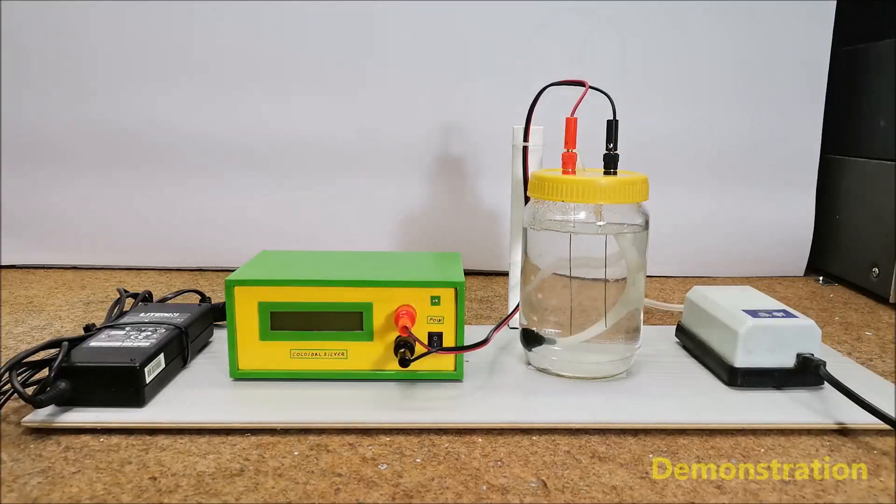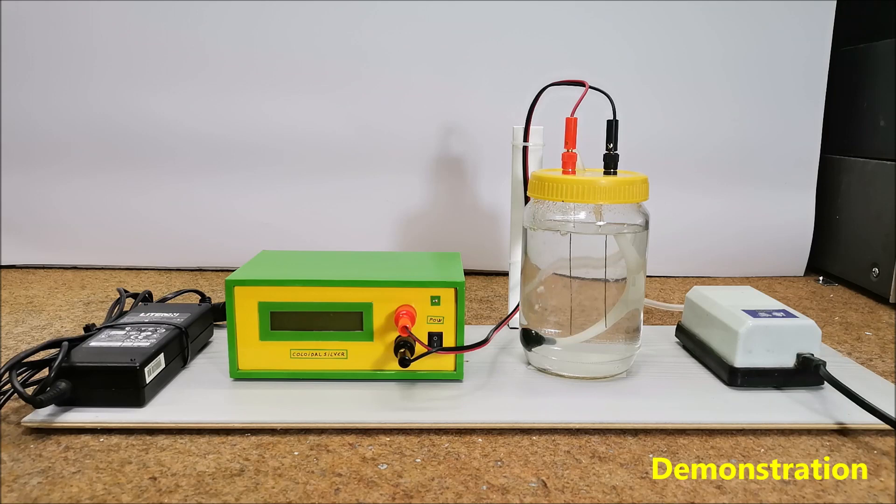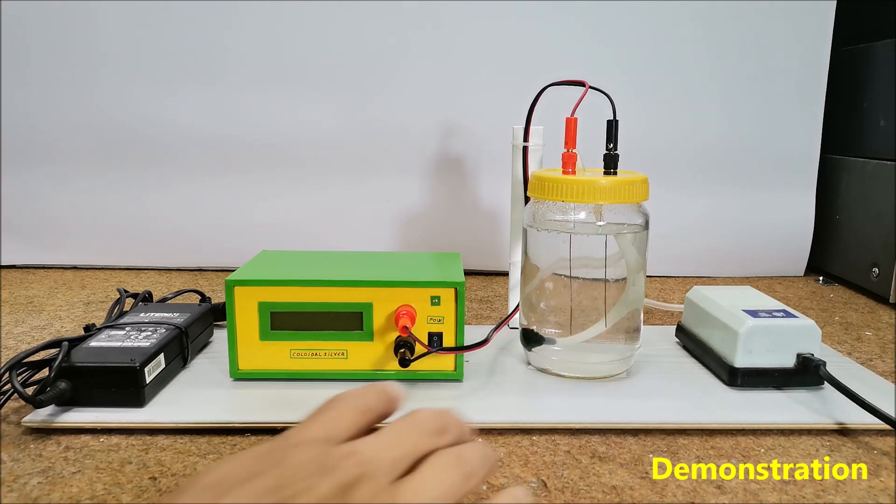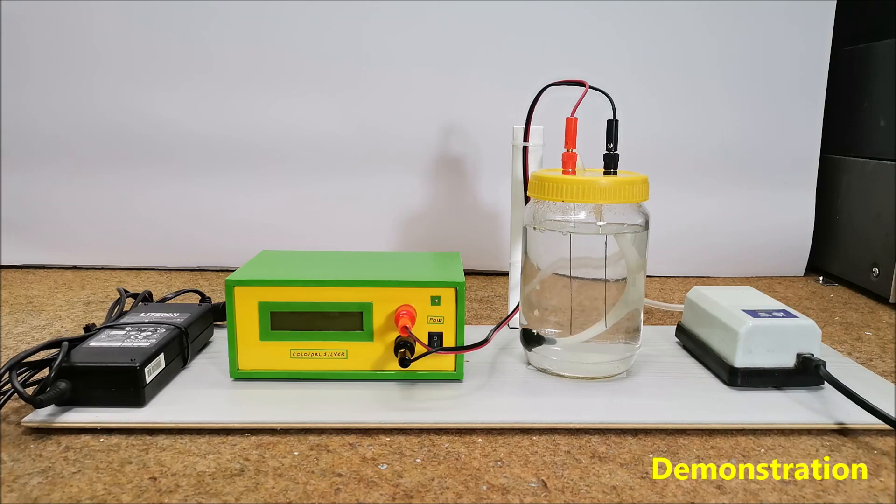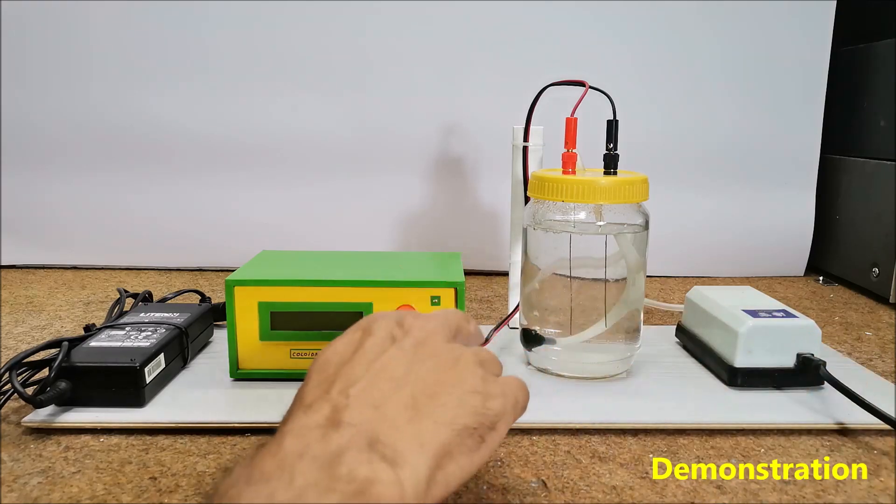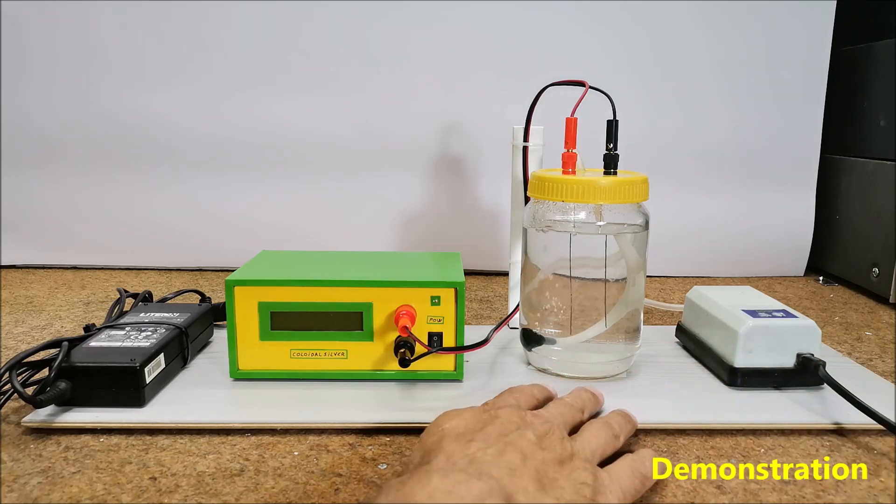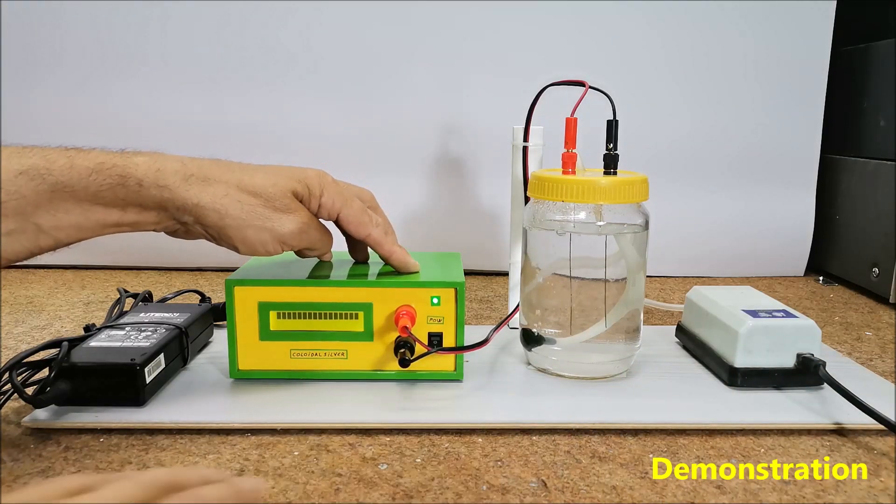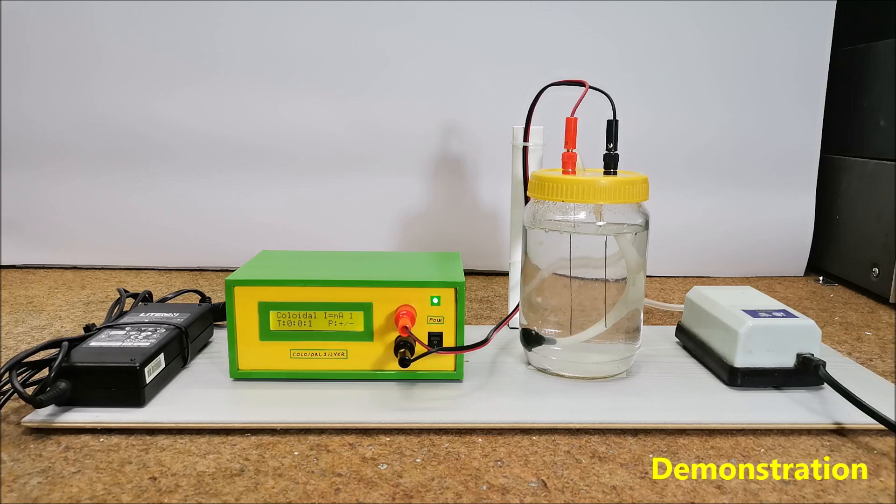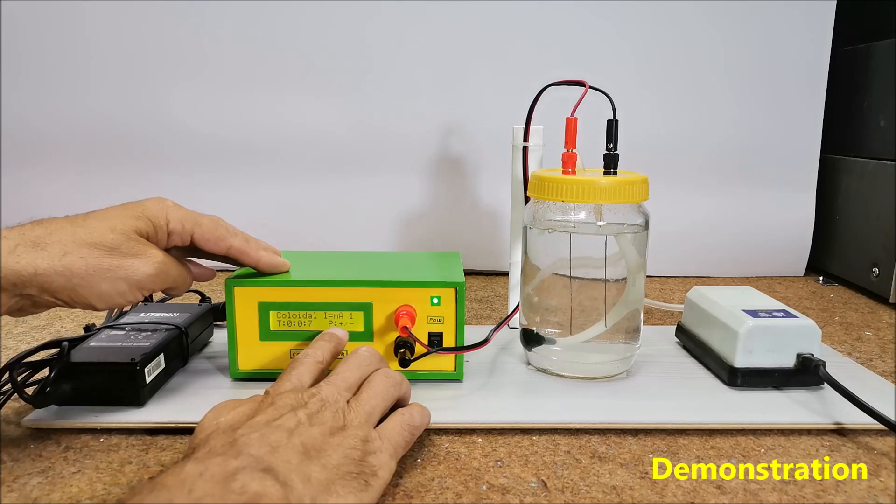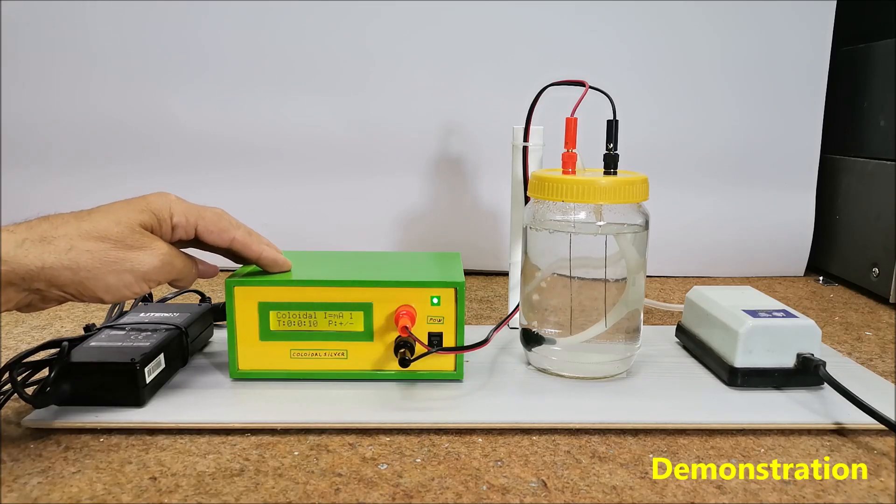And now let's see how the device works in real conditions. First, we need to fill the glass container with distilled water, which has a ppm concentration close to zero. Then we connect the electrodes, the air pump, and start the device. Some basic information appears on the LCD display.